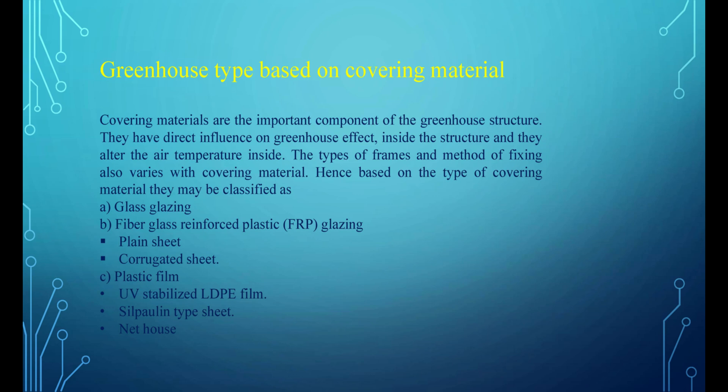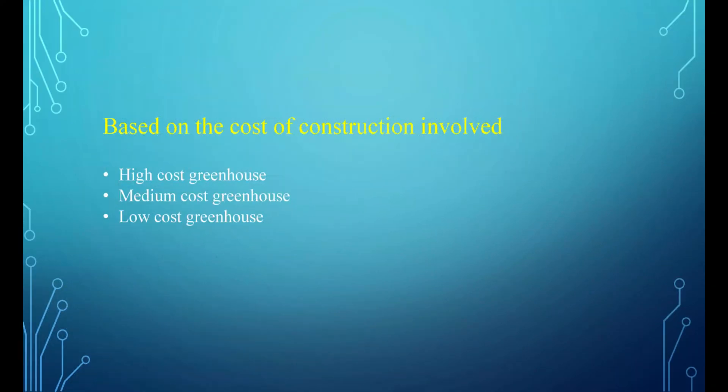Covering materials are an important component of the greenhouse structure. They have a direct influence on the greenhouse effect inside the structure and alter the air temperature inside. The types of frames and method of fixing also vary with covering material. Based on type of covering material, greenhouses may be classified as: A. Glass glazing, B. Fiberglass-reinforced plastic (FRP) glazing, which includes plain sheet and corrugated sheet, and C. Plastic film, which includes UV-stabilized LDPE film, Shilpaulin-type sheet, and Net house. Based on cost of construction: High-cost greenhouse, Medium-cost greenhouse, and Low-cost greenhouse.